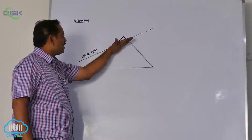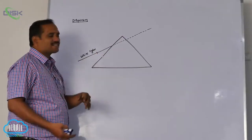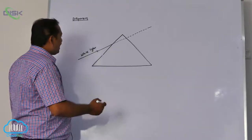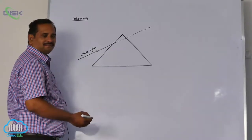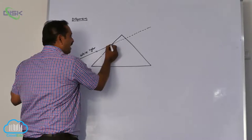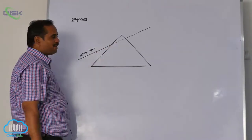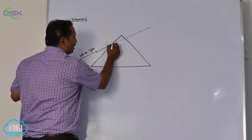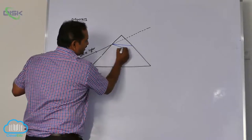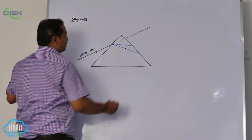Light moves in a straight path if the prism is absent. Because of the prism, light moves from a rarer to a denser medium, and light bends away from the normal.